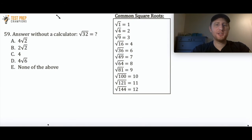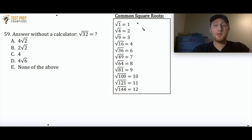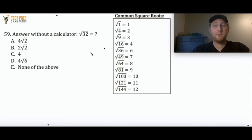Answer without a calculator: the square root of 32 equals what? Is it 4√2, 2√2, 4, 4√6, or E, none of the above? This is a really hard question. I've given you a list of common square roots — you won't be given this on your test, so if you have extra time, you'll want to memorize these values. Pause the video and try to figure this out using this list.